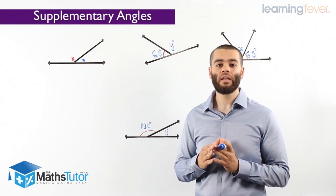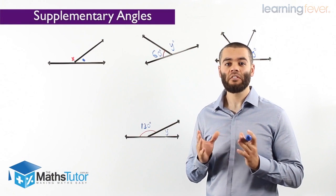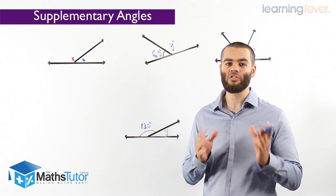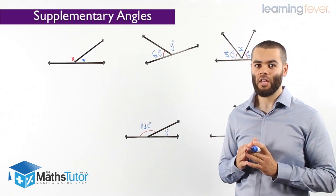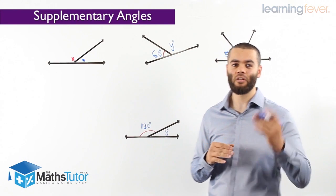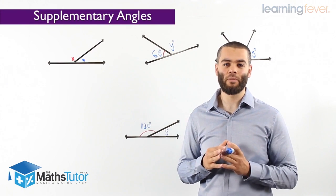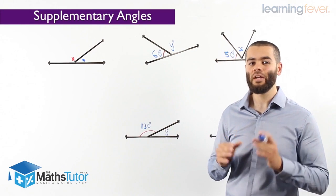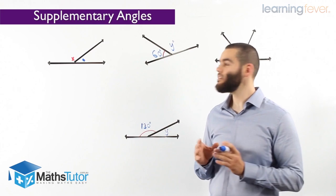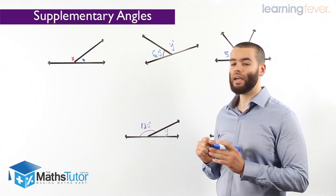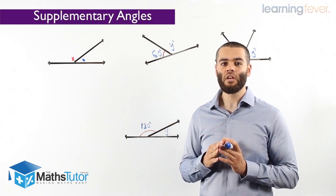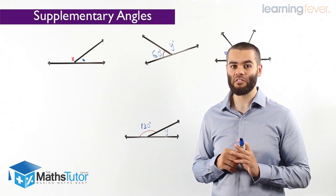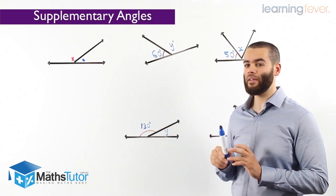Today we're going to be looking at supplementary angles, or what we can call adjacent supplementary angles. They are also related to the adjacent angles and the complementary angles that we've covered earlier on. We're going to notice that they add up to 180 degrees.